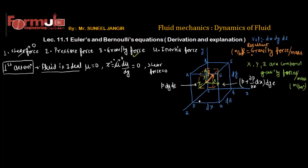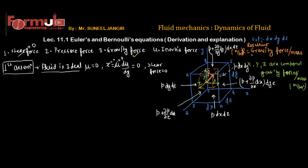Similarly, on the face in the y-direction, pressure intensity p acts over area dx·dz, and over distance dy the pressure varies, giving (p + ∂p/∂y·dy)·dx·dz. On the back face in the z-direction, p acts over area dx·dy, and the variation over dz gives (p + ∂p/∂z·dz)·dx·dy. So pressure force is acting on all faces of the fluid element.